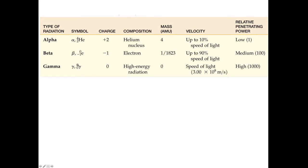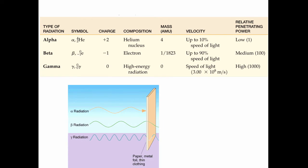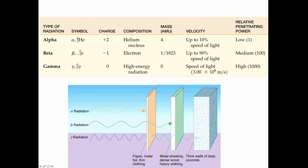And then gamma, 0,0 for its charge and mass, both being 0, and it travels at the speed of light with much more penetrating power. In fact, alpha radiation can be stopped typically by maybe just a few sheets of paper or some thin clothing. Beta radiation will penetrate through things that alpha radiation won't, but it will be stopped by metal sheeting or dense wood or heavy clothing. And then gamma radiation requires thick walls of concrete or some lead or very dense material to stop it.